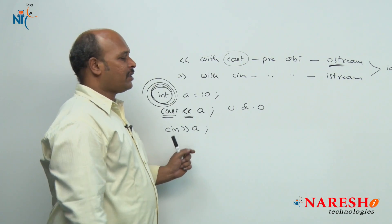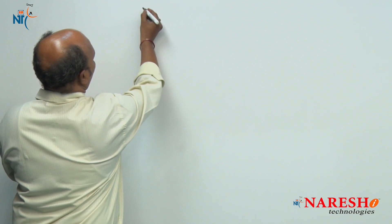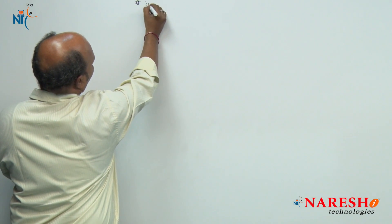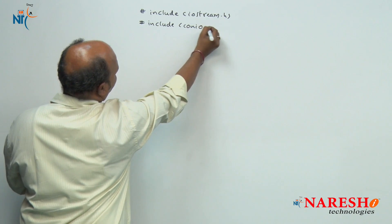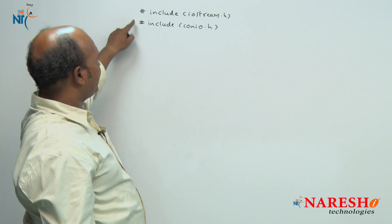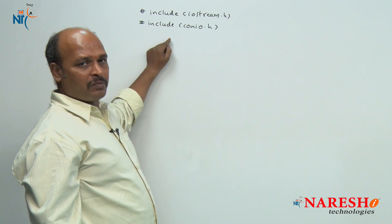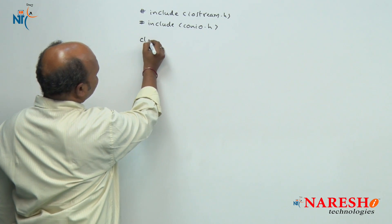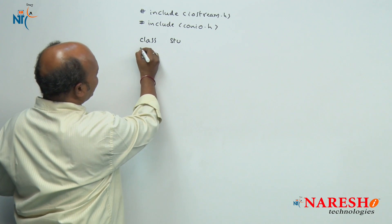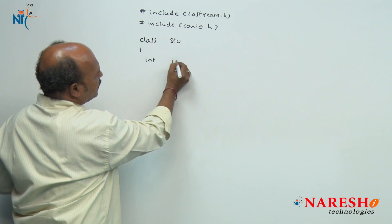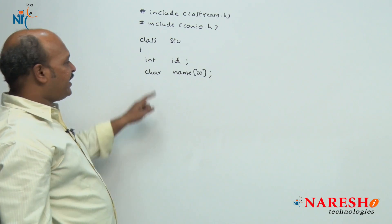Now I will show you how to work with insertion and extraction operators with operator overloading. First, the common header files: #include <iostream.h> and #include <conio.h>. One header file is to manage cout and cin, the other is to manage console I/O operations. Then there is a class called student. The student class has two data members: student ID number and name.